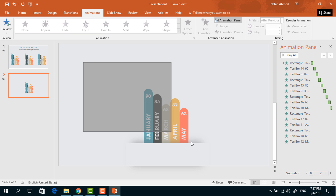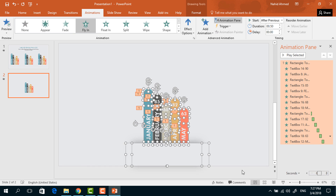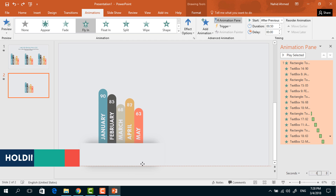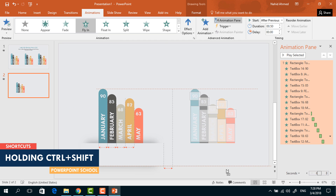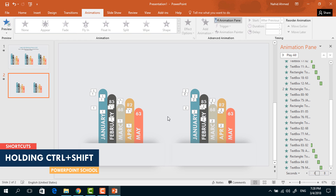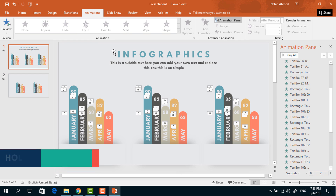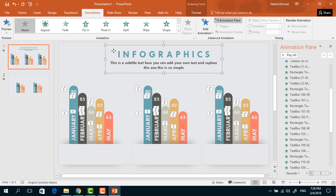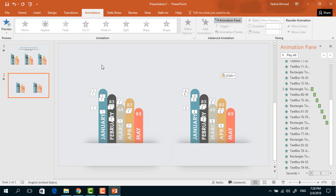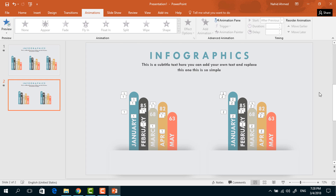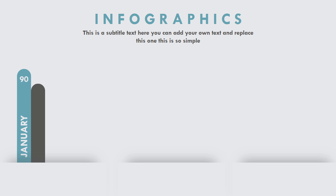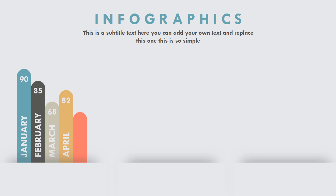After adding all the animations, select all the objects, drag them to position, and holding Ctrl+Shift, drag to the right — it will be duplicated along with the animations. Now from our previous slide, copy the upper portion and paste it here by pressing Ctrl+V, and our slide is ready. If you start the slideshow, you can see that the whole animation is working perfectly.